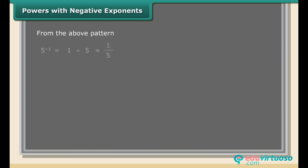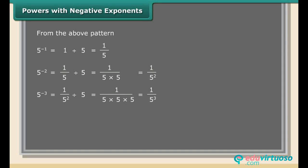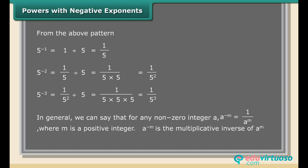From the above pattern: 5 raised to the power minus 1 = 1/5; 5 raised to the power minus 2 = (1/5) ÷ 5 = 1/(5 × 5) = 1/5²; 5 raised to the power minus 3 = 1/5² ÷ 5 = 1/(5 × 5 × 5) = 1/5³. In general, for any non-zero integer, this pattern defines the laws of exponents.